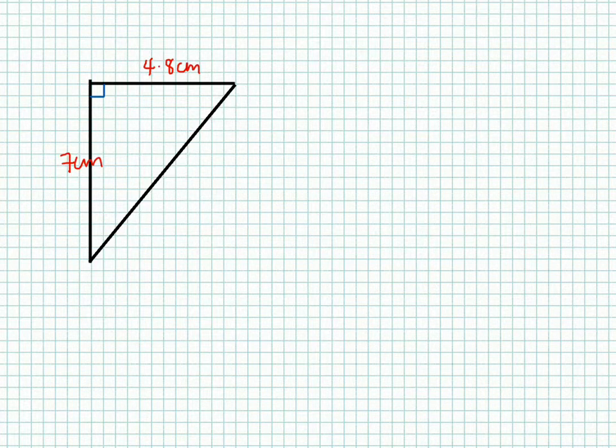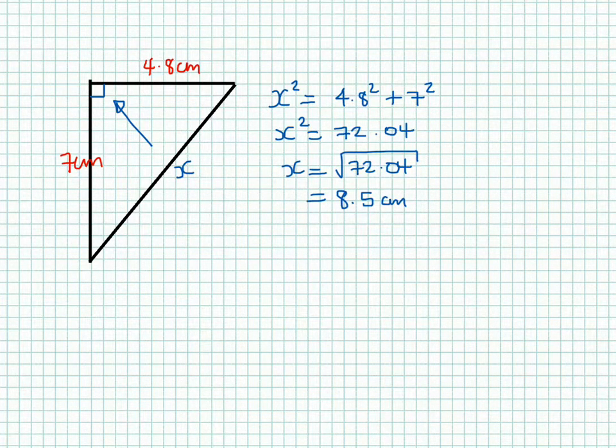So here we've got our hypotenuse again. I know that that's the hypotenuse because it's directly opposite the right angle. So I will start with that. x² is equal to 4.8² + 7². Alright, a quick bit of working out, which I wouldn't bore you with, so I'll just bring you straight to the end. Okay, so here is the working out. I've obviously squared 4.8 and squared 7 and then added it together to give me 72.04.